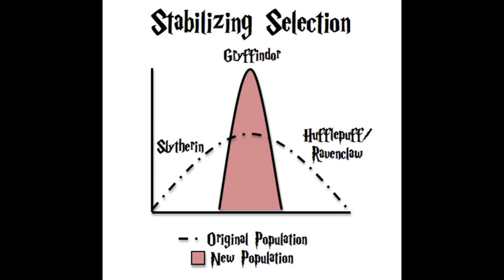This intermediate work ethic is advantageous to Gryffindors because it allows them to have a better quality of life. They will reproduce with other Gryffindors who share the same characteristics, and over many generations, more Gryffindors will be produced, resulting in a population that primarily consists of these intermediate traits. For example, take a look at these new Gryffindors.